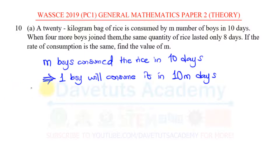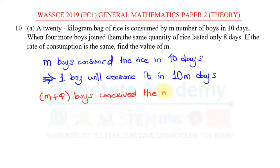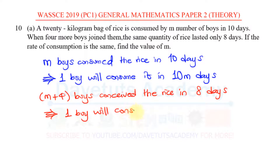In the second case, we are told that when four more boys joined them, meaning that we now have M plus four boys consuming the rice in 8 days. That inherently means that one boy will consume it in 8 multiplied by (M plus four) days.